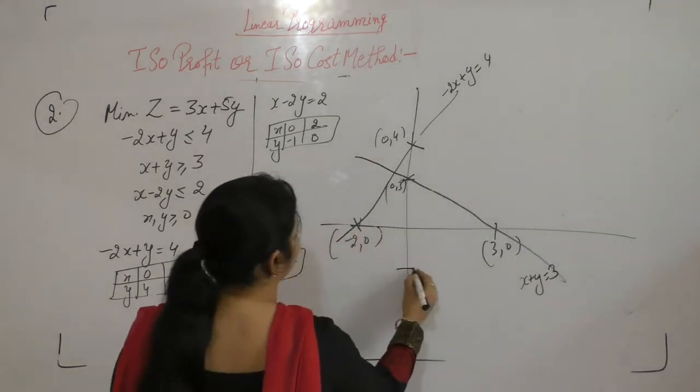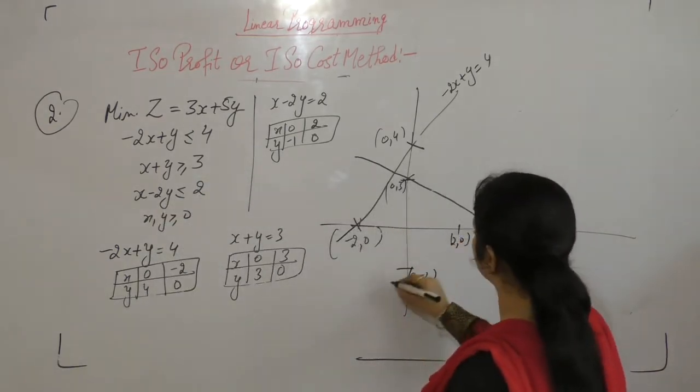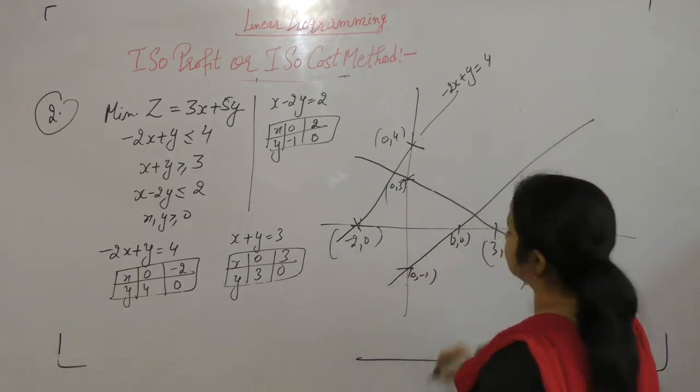x is 0, y is minus 1. x is 2, y is 0. So this is the line x minus 2y equals 2.